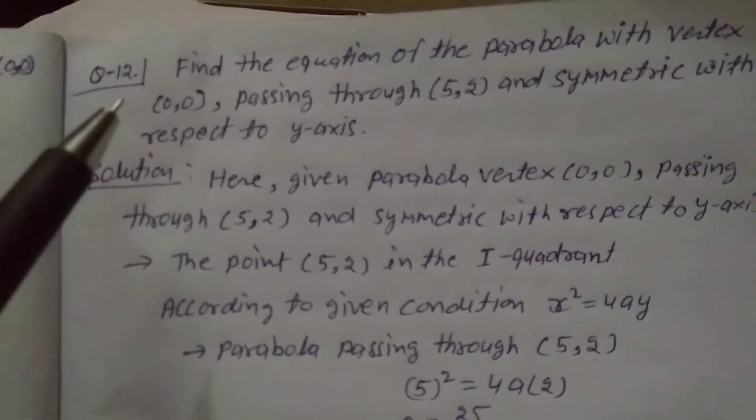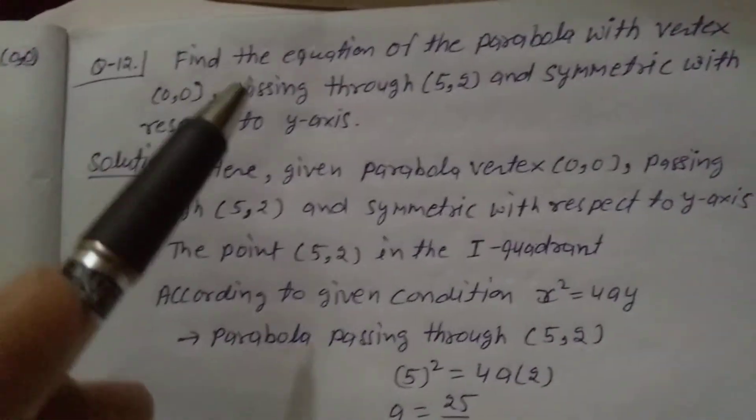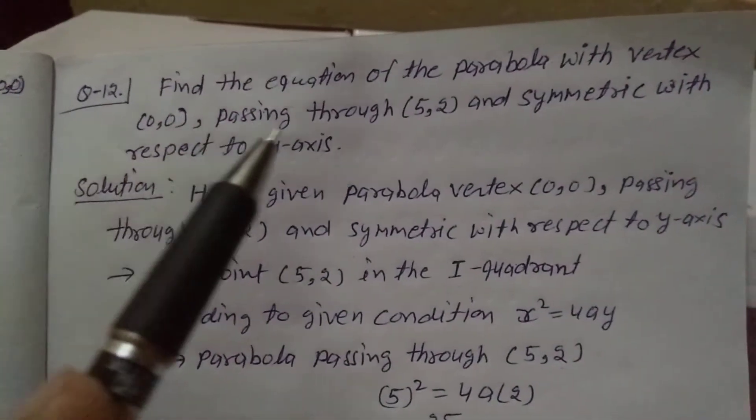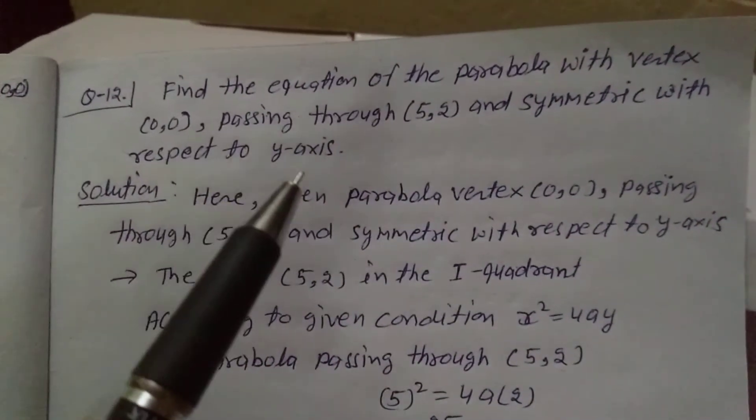Explanation number 12, exercise 11.2, class 11th. Find the equation of the parabola with vertex (0,0), passing through (5,2), and symmetric with respect to x-axis.